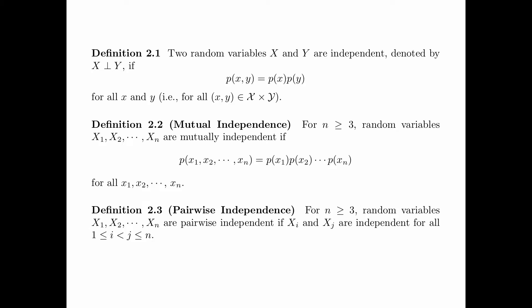Definition 2.3 is about pairwise independence. For n greater than or equal to 3, random variables X1, X2, up to Xn are pairwise independent if Xi and Xj are independent for all i, j between 1 and n — that is, any two of these random variables are independent. It can be shown that pairwise independence is implied by mutual independence, but not vice versa.